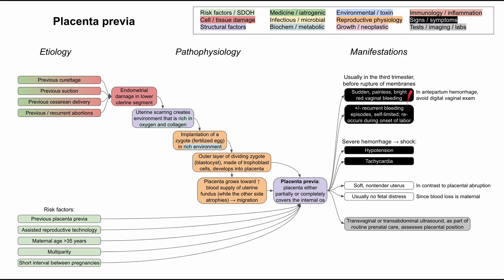How do you diagnose this? It is usually a clinical diagnosis, and you typically have some hints in advance. In moms who have had routine prenatal care, any ultrasound — transvaginal or transabdominal — as part of routine prenatal care typically assesses placental position. It's usually well documented if someone is following up with their OB-GYN throughout the pregnancy, so you generally have awareness that it may happen before any bleeding occurs in the third trimester.